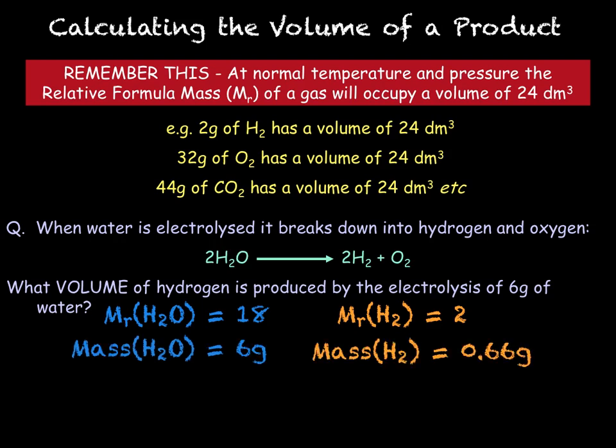In order to then work out our volume we will use the formula volume equals mass over mr times by 24. This is a rearrangement of the equation from earlier. So we will do our 0.66 grams divided by 2 times 24 to give us a volume of hydrogen gas of 7.92 dm cubed.